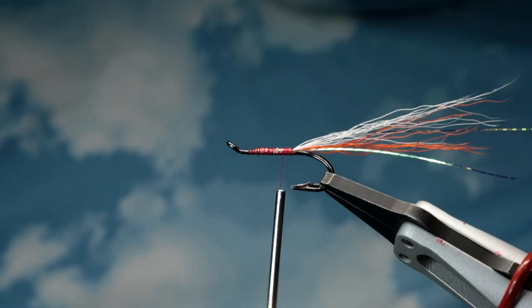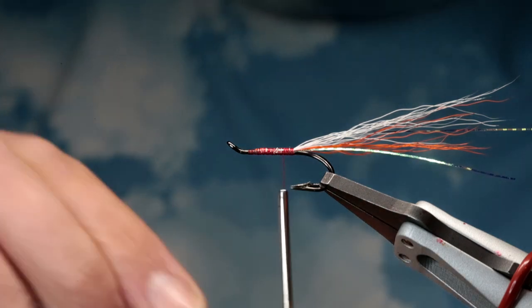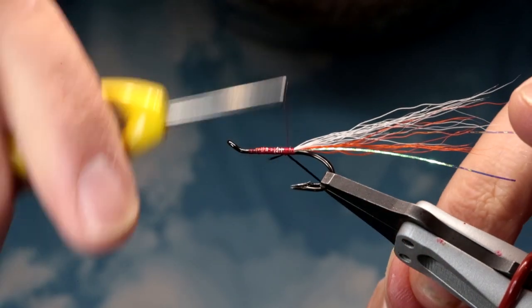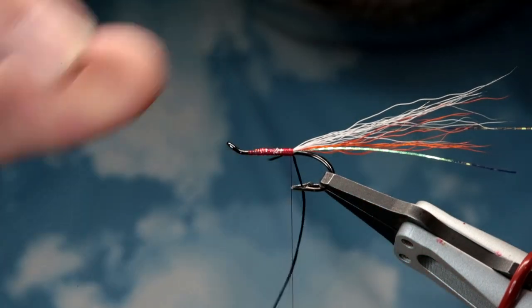Right, so I'm just going to tie in the body which is simply Unifloss black. So I'm just going to put in an underbody.